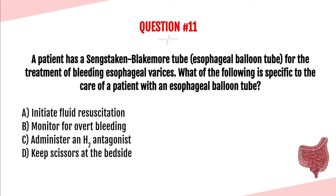Question number eleven. A patient has a Sengstaken-Blakemore tube (esophageal balloon tube) for treatment of bleeding esophageal varices. Which of the following is specific to the care of a patient with an esophageal balloon tube? A. Initiate fluid resuscitation. B. Monitor for overt bleeding. C. Administer an H2 antagonist. Or D. Keep scissors at the bedside. The answer is D — keep scissors at the bedside. In the event the tube becomes displaced and moves up, the esophageal balloon may obstruct the airway and result in an acute airway emergency.